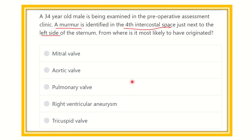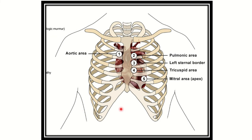Now let's look at the auscultatory areas of the heart and pericardium. Here we can see the auscultatory area of the mitral region — the mitral area is auscultated at the left fifth intercostal space. It is important to note that only one auscultatory area is present on the right side. The aortic area is at the second intercostal space on the right side — this is the only right-sided auscultatory sound of the heart.